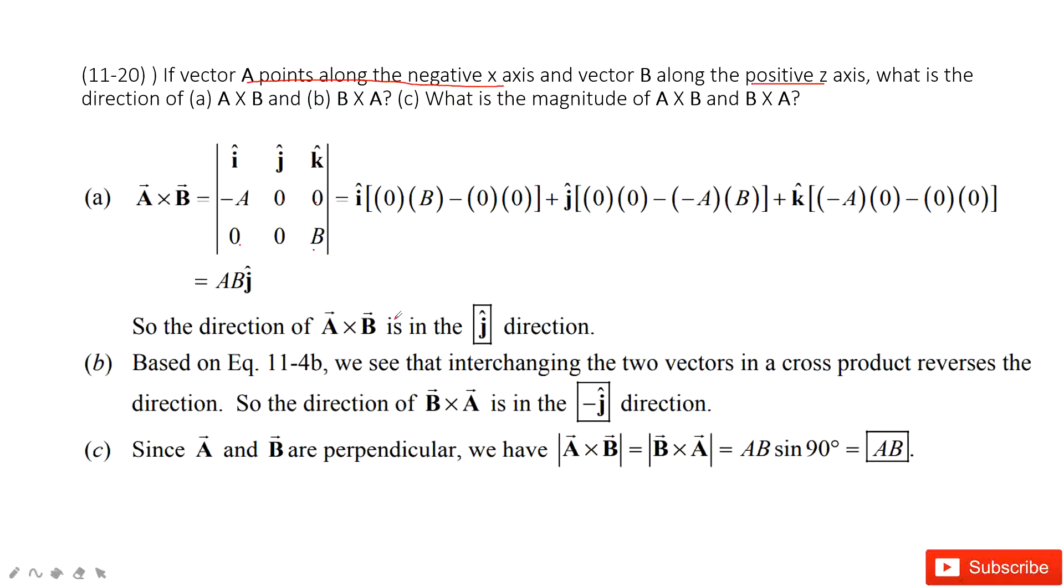j is the direction. And also, for B cross A, as we learned in our textbook in this equation, we just get a flip in the direction. So now it is in the negative j direction.